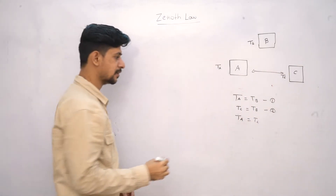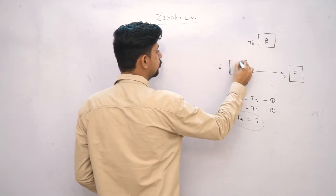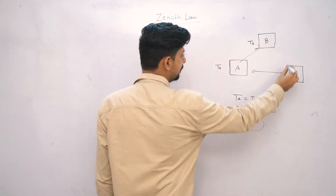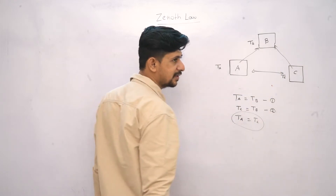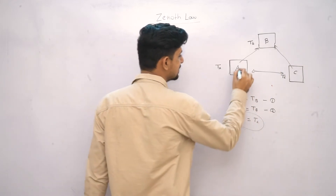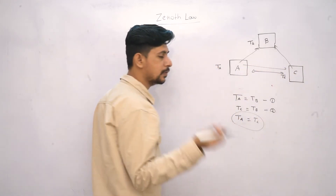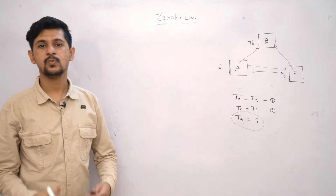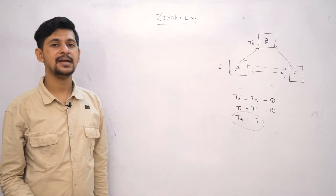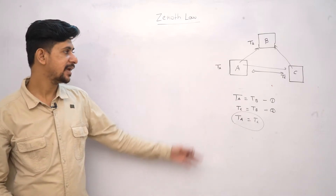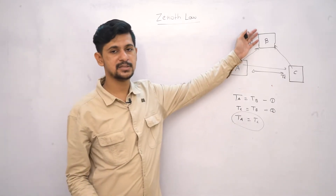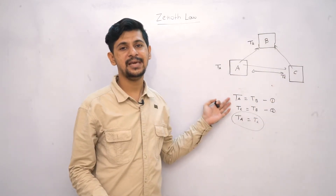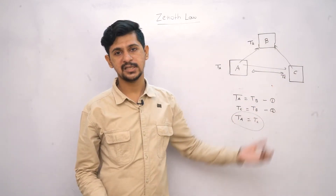This is the Zeroth Law, which means if two bodies are in thermal equilibrium with each other, and two other bodies are in thermal equilibrium, then the first and the third body are also in thermal equilibrium. This is quite logical — if A and B have the same temperature, and B and C have the same temperature, then obviously A and C have the same temperature.